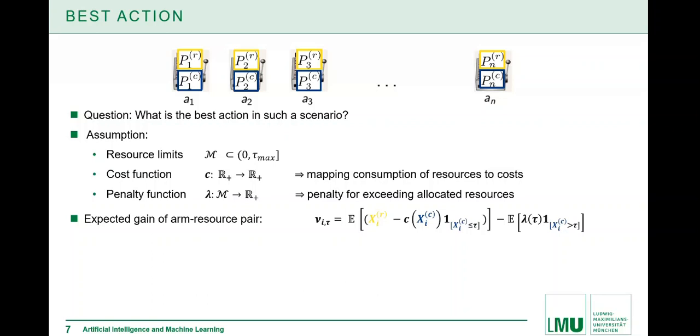With this together, we can specify a term which is representing the suitability, the quality of an action, of an arm resource pair. This is the difference we see here on the display. In a nutshell, it's nothing else than expected profit minus an expected loss, so an expected gain. With this, we can specify quite easily what the best action is, an arm resource pair, namely the one which is maximizing the expected gain.